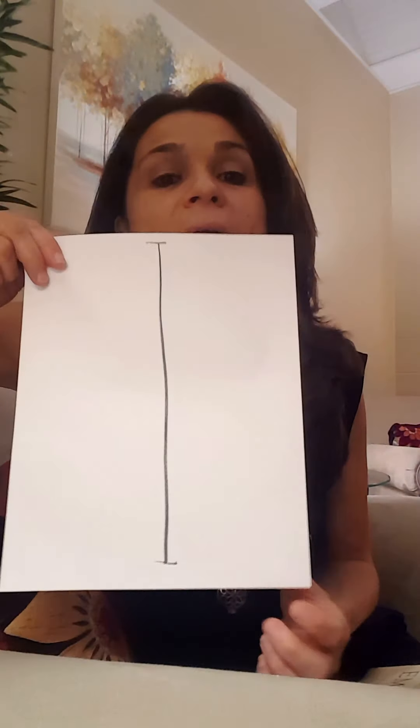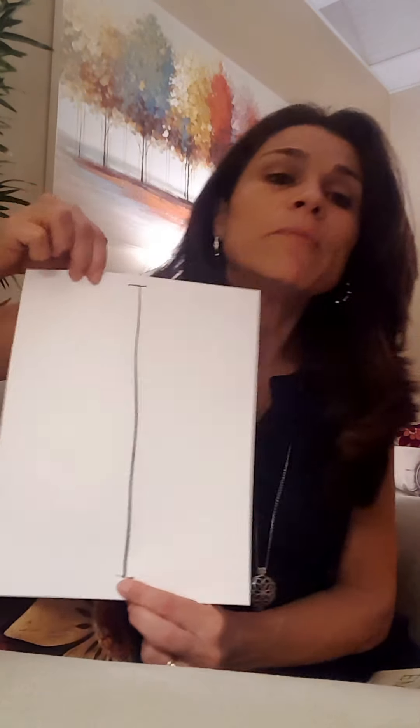So you just need a sheet of paper and you're going to draw a vertical line with two points on it. So I did it here and you're going to start with this bottom point.